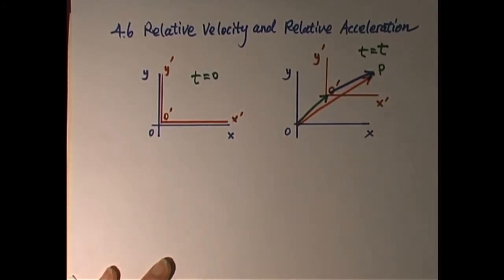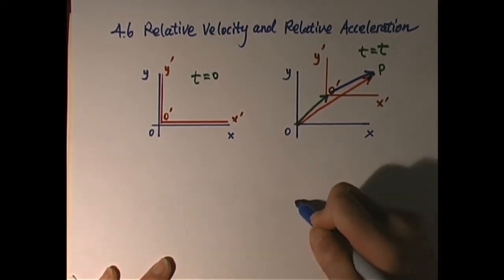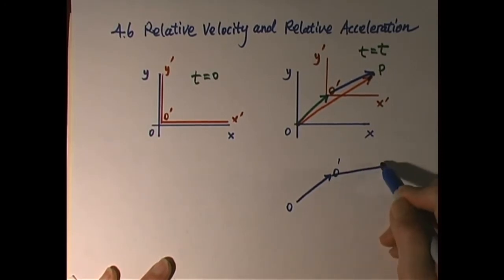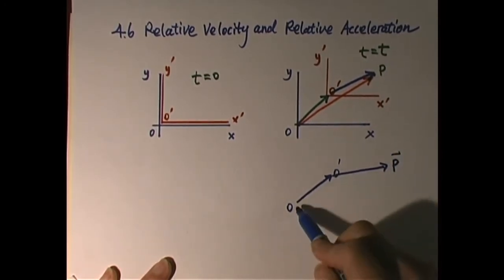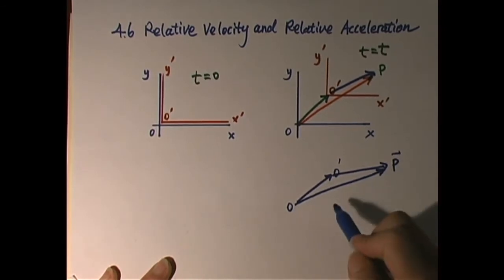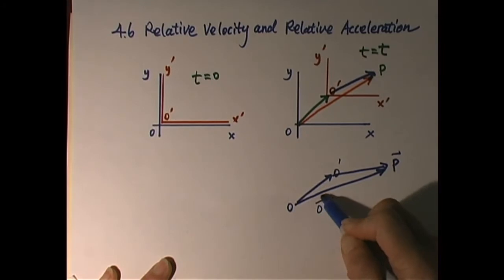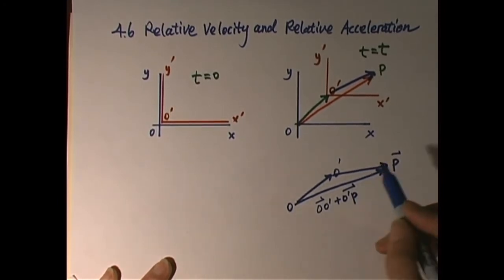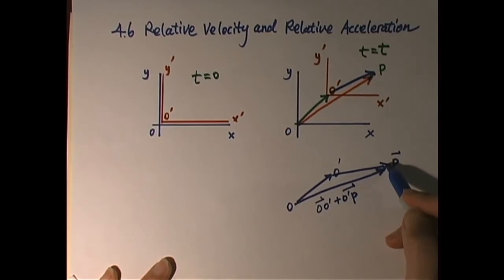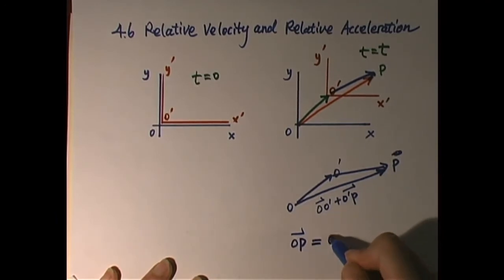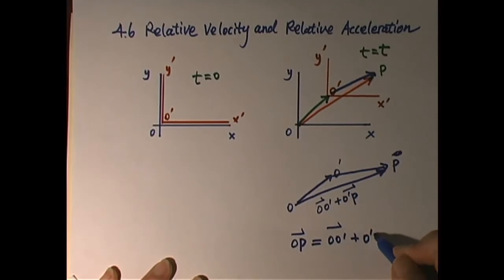We learned about vector addition. The first vector goes from o to o prime, the second from o prime to p — tail to tip, tail to tip. So therefore this one is the resultant. So this one is o to o prime plus o prime to p. That is actually o to p — that is the apple's position, or particle's position, with respect to o. So the vector o p equals the vector o o prime plus the vector o prime p.